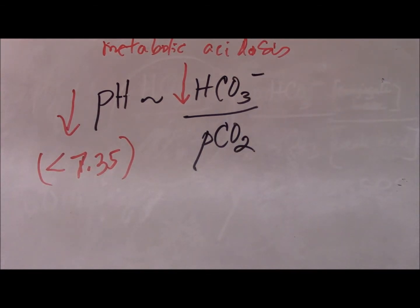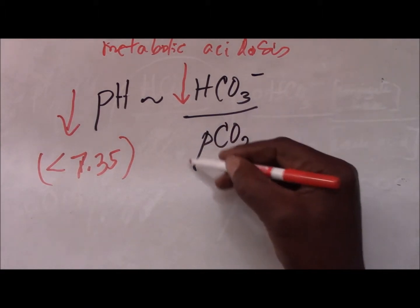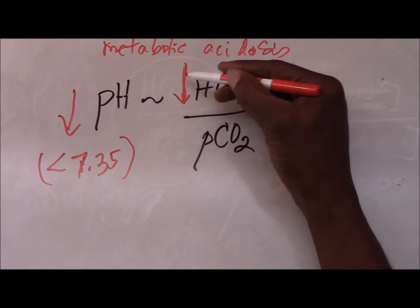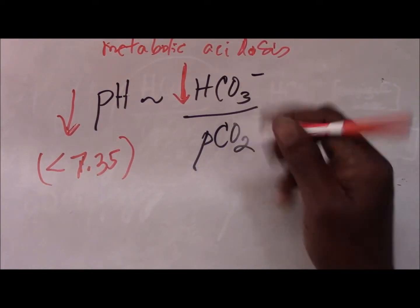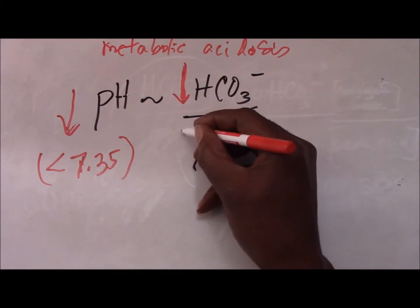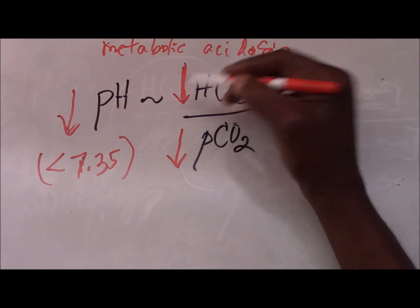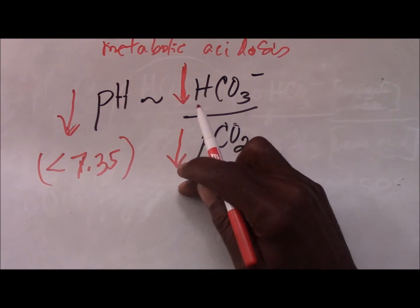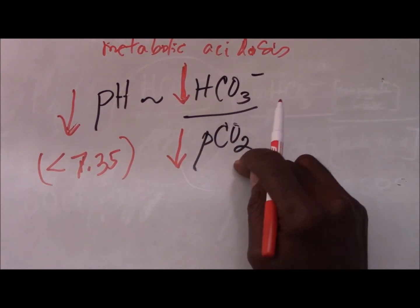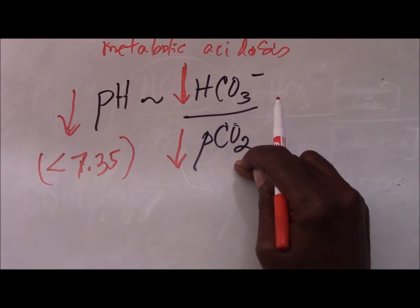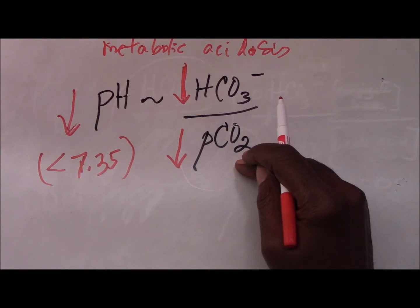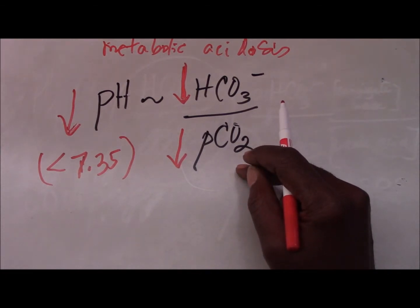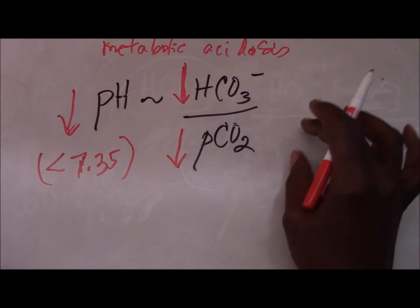What we observe here is that if there is a change in this component — this is the abnormal component, the primary event — the loss of bicarbonate causes a corresponding decrease in pH. The compensation will occur in the denominator and in the same direction as the primary event. So there will be a lowering of the partial pressure of carbon dioxide, which causes the patient to hyperventilate. Hyperventilation refers to an increase in the rate or depth of breathing, with the patient blowing off carbon dioxide in an attempt to return the base-to-acid ratio to normal.